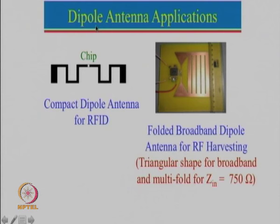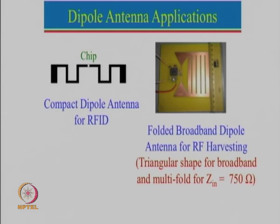Now some applications of dipole antennas: the conventional applications are well known — dipole antennas used as transmitting or receiving antennas, or in arrays to design high-gain antennas. Dipole antennas have been used in Yagi-Uda antennas for directional high-gain applications, and in log-periodic antennas for ultra-broadband applications. A conical dipole can be used for broadband applications.